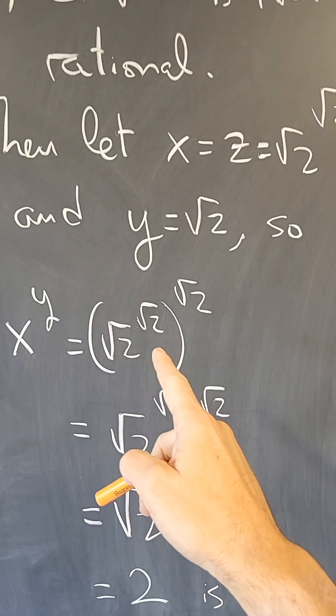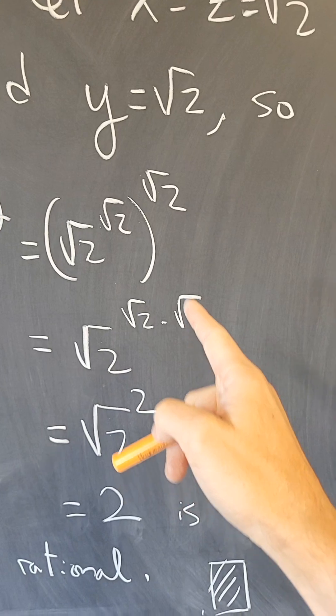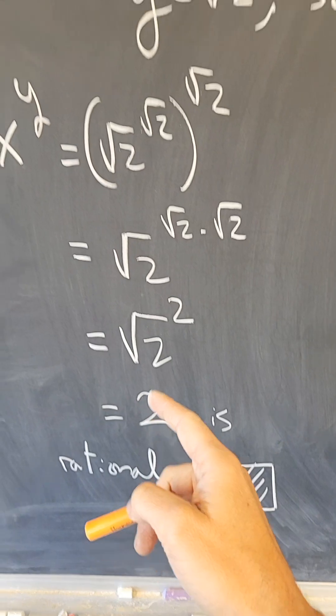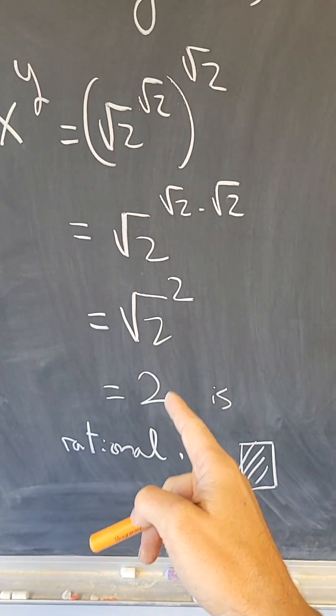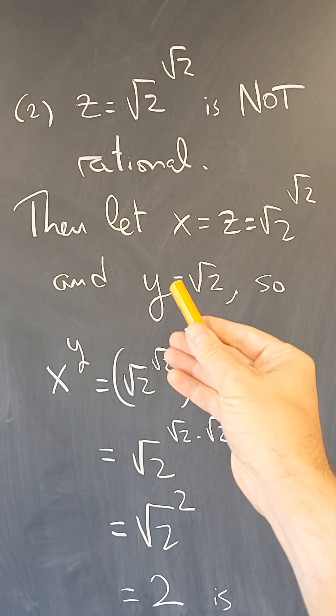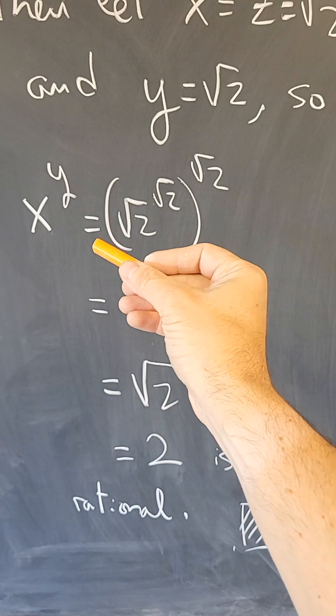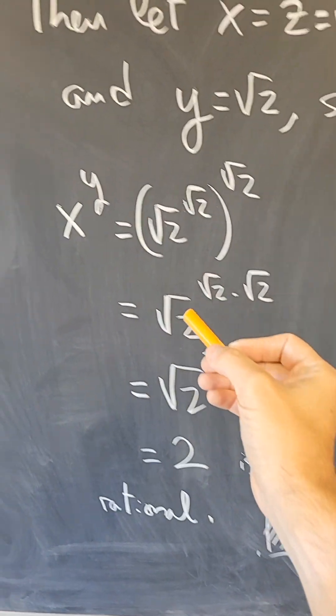So this is an irrational number to an irrational power. And when I simplify using the laws of exponents, I get 2. So x to the y is 2, which is rational. So in this case, I have also found x and y such that x to the y is rational with x and y irrational.